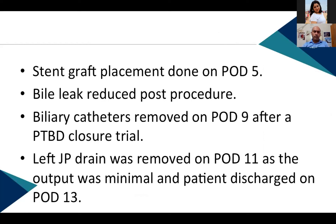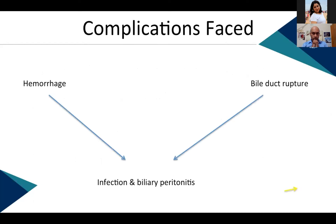The bile leak started reducing post-procedure. Antibiotics were continued and external biliary catheters were kept for a closure trial. Bile was allowed to drain internally with no increase in drain output. The left JP drain was removed on post-operative day 11 since output was minimal, and the patient was discharged on post-operative day 13. Three major complications were faced: hemorrhage, infection, and bile duct rupture leading to biliary peritonitis.